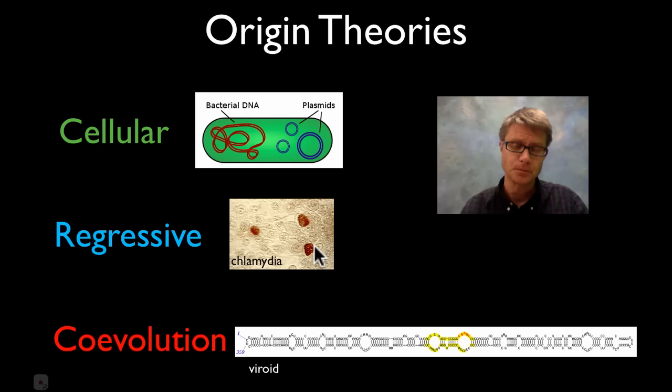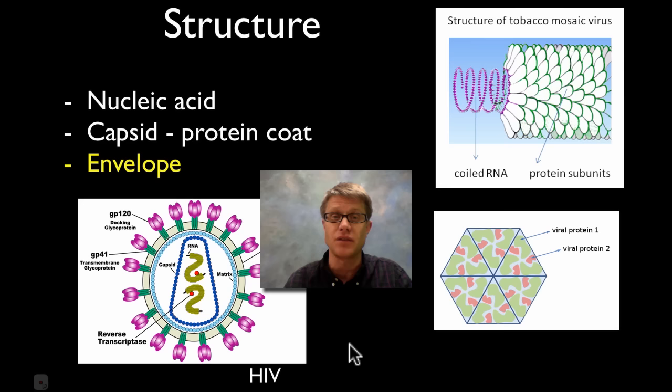Or it could have been coevolution - that these viruses were evolving with cells, just like insects and plants were evolving together. This is a little viroid, which is a little bit of RNA plant virus. There's evidence to suggest that any of these theories could have produced that first virus. But nonetheless we eventually had viruses.